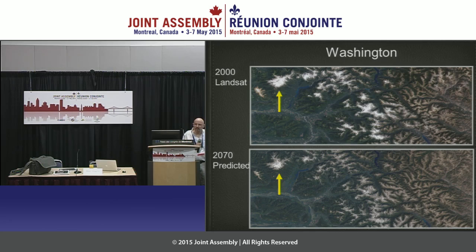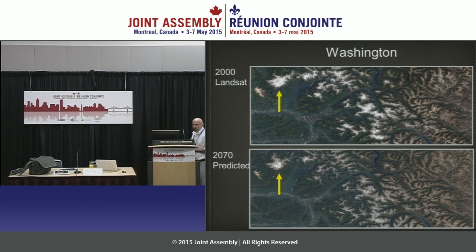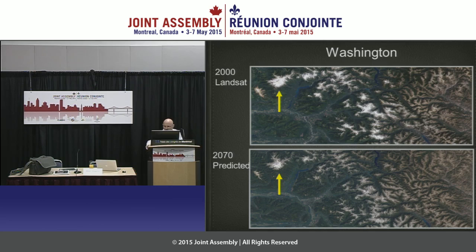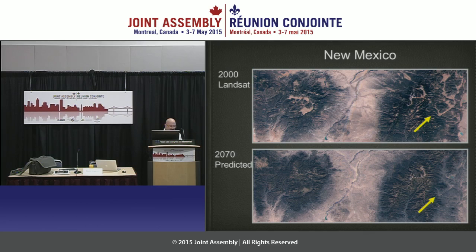Perennial snow at this site only takes up one percent of the area, but 65 percent of that perennial snow cover is gone in the prediction. Let's move on to the next site — the New Mexico site.